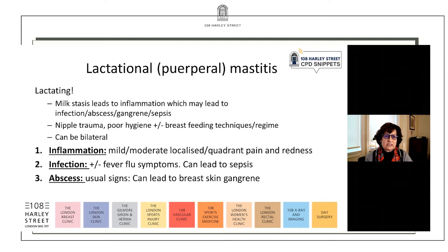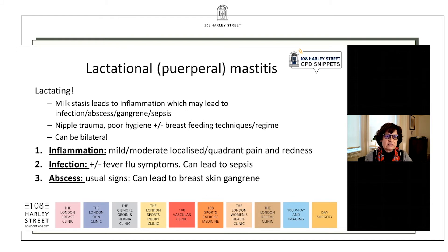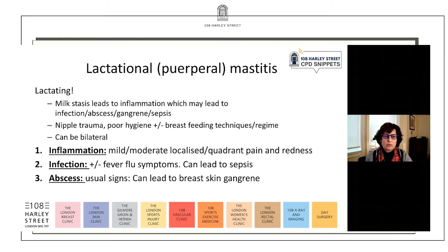For lactational mastitis, clearly the woman is going to be lactating and the underlying cause is thought to be milk stasis, which then leads to inflammation, which may then lead to infection, even an abscess, even skin gangrene and generalized sepsis requiring admission. The cause of the infection is probably related to nipple trauma from breastfeeding, poor nipple or breast hygiene during breastfeeding, poor breastfeeding techniques or poor regimens, and it can of course be bilateral.